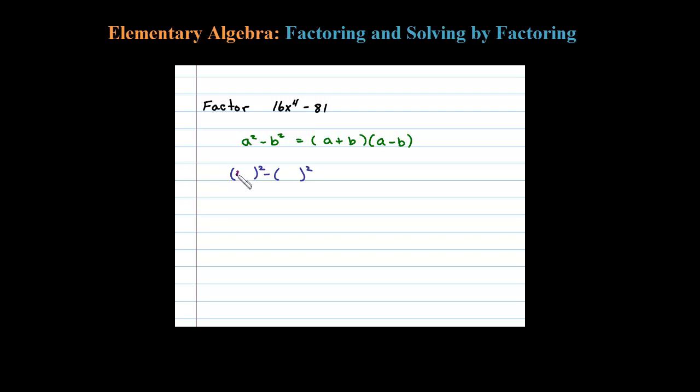4x squared squared is 16x to the fourth. And then what squared gives me 81? Well, that's pretty easy to see—that's just 9, so that's my b. So we're going to factor this as (a + b) times (a - b), in this case (4x squared + 9) times (4x squared - 9).